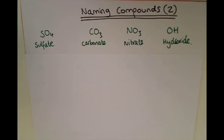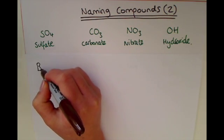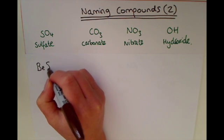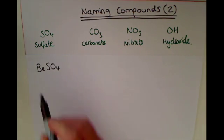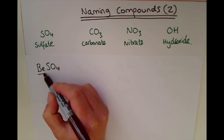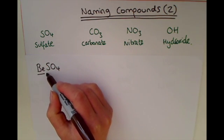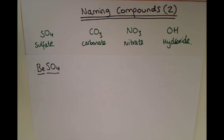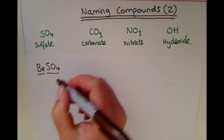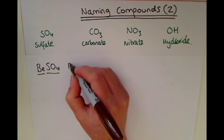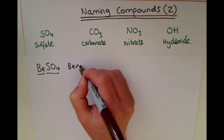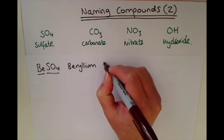You might see these endings on different compound names. For example, if you saw BeSO4, you would name the metal and then the second word would be sulfate. Because Be stands for beryllium, this compound would be called beryllium sulfate.